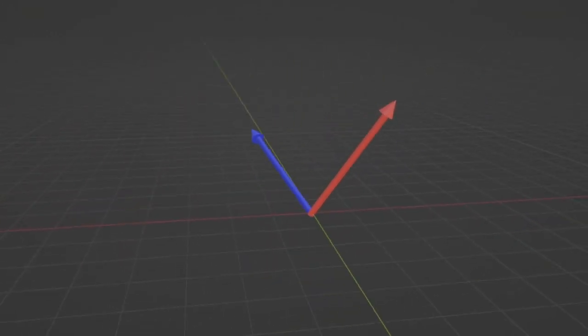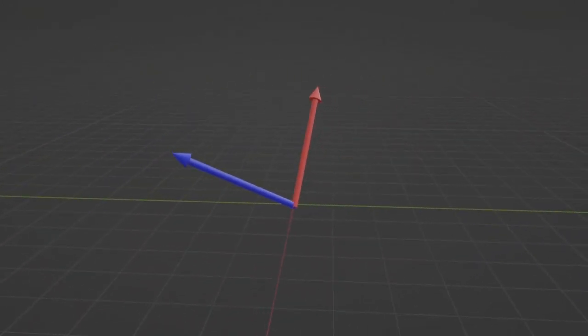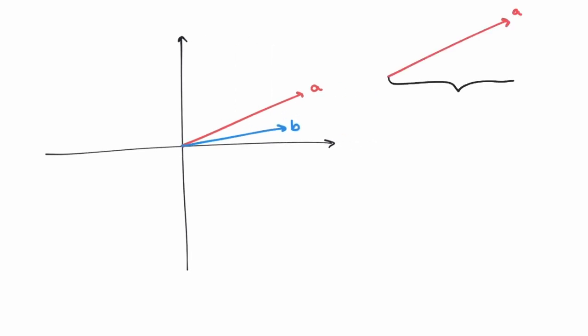Given two vectors, how would you find the angle between them? Let's just start with 2D vectors for now. Let's call them A and B. Say that A has component A1 in the horizontal direction and A2 in the vertical direction. Similarly, we have the components B1 and B2 for B. We want to find a formula for the angle in terms of the vectors A and B. Let's call the angle alpha. What would you try first?